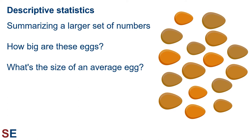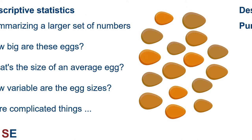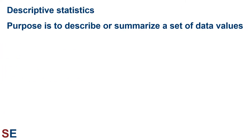Or we might be interested in how variable the eggs are, which we can represent with a few different descriptive statistics. There are also more complicated aspects about sets of numbers that we can describe with other summary statistics. For example, are there a few much larger eggs or super small eggs that are different from all the rest? There are descriptive values that we can calculate to describe these things. When we use our descriptive statistics in this way, we're helping to simplify the overall situation so that we can understand it better and describe it to other people. Descriptive statistics is therefore the aspect of statistics in which the purpose is to describe or summarize a set of data values.